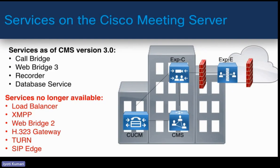The services of CMS version 3.0 and later are CallBridge, WebBridge 3, recording, and database services. CallBridge is the very important primary service in the CMS deployment, used to manage all call logs. Ideally, all media for calls to a conference should reside on the same CallBridge. All these services on CMS need to be enabled before accessing CMS after installation. The web page is not accessible right after installation — unlike CUCM or Expressway — you need to enable the web admin service, install certificates, and then get access to the admin page.